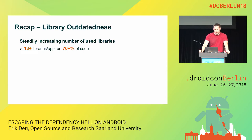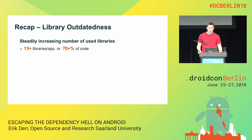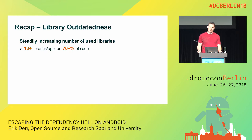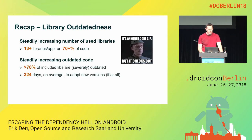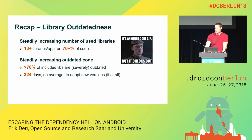To recap: our longitudinal study of dependencies shows a steady increase over the years in the number of libraries used by app developers. On average, there are about 13 libraries per application. In other words, more than 70% of code in modern apps is from third-party sources, and only 30% is actually written by the developer. With the increasing number of libraries, there's also a steadily increasing number of outdated code. Over 70% of libraries are severely outdated — not just by a version or two, but by a year or two. When libraries were updated at all, it took almost one year for the app developer to do so.